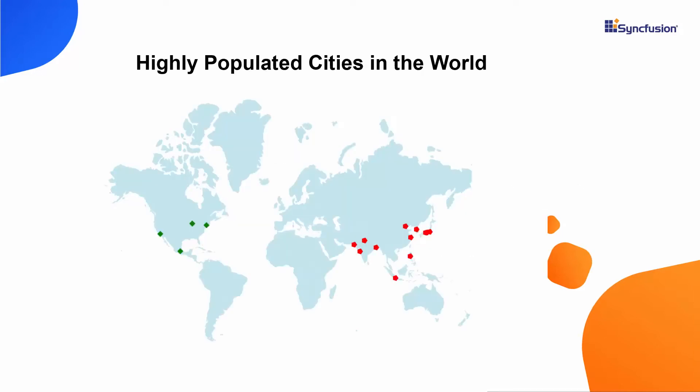Look at this example, where a World Map displays markers about the top cities by population in the world. The markers in the map appear with two different shapes and colors. Now I will show you how to write the code to add and customize markers in the Blazor Maps control.